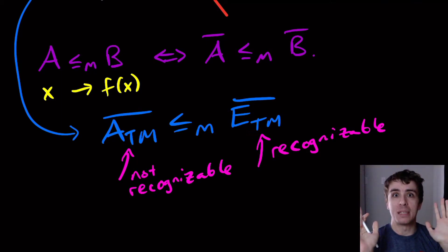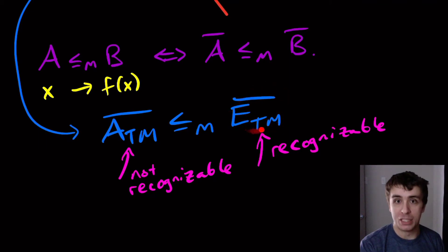And so we don't have to run forever necessarily. So therefore we get a recognizer for the complement of ETM.